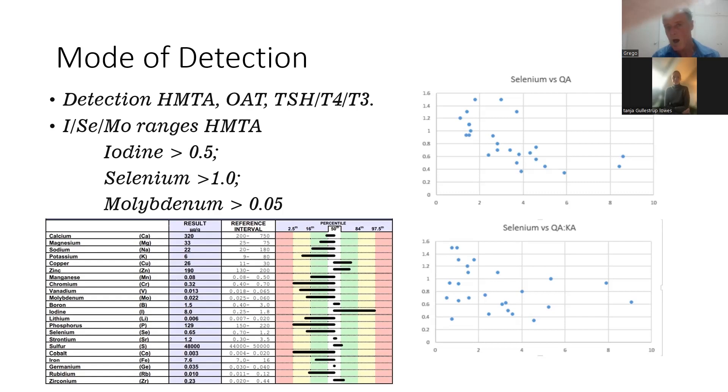The other test that's useful is the TSH, T4, and T3. So they're measures of thyroid activity, so I can see whether they're looking hypothyroid or not. And it doesn't take much deficiency of selenium and iodine to be hypothyroid, functionally hypothyroid.